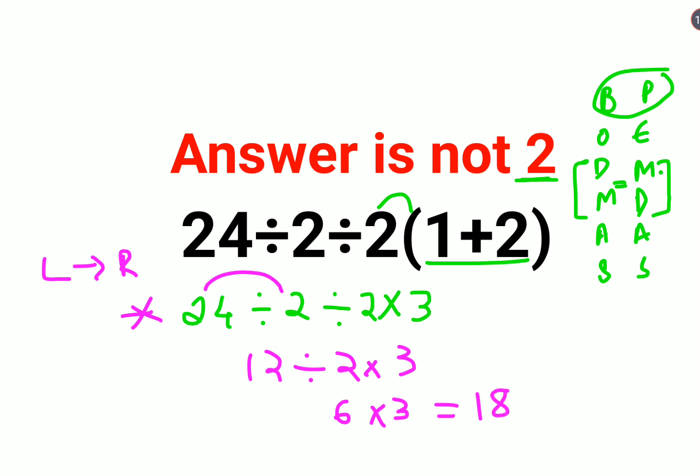Okay, so I hope this is very clear to everyone. So now you might be wondering, then when is it 2? See, it will be 2 only and only if they had provided this entire thing under a bracket.